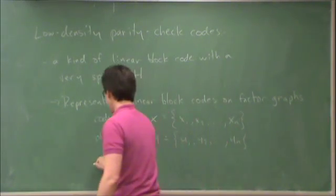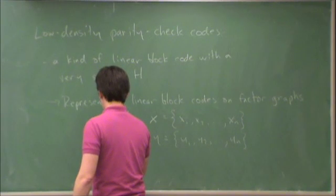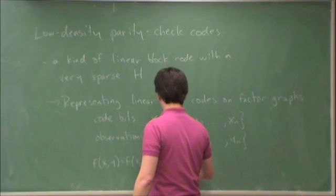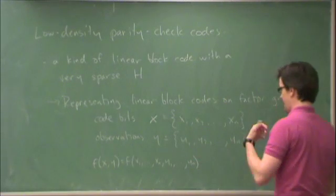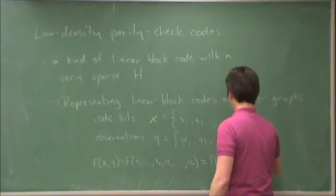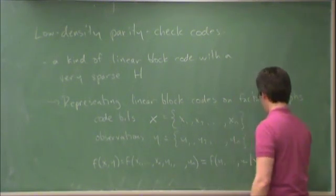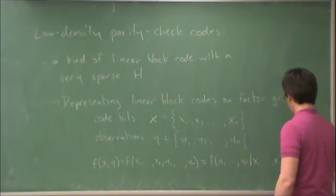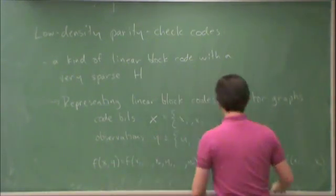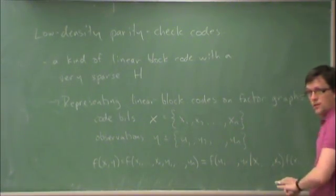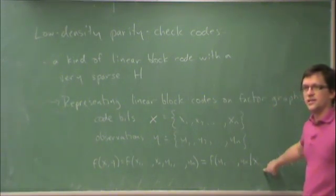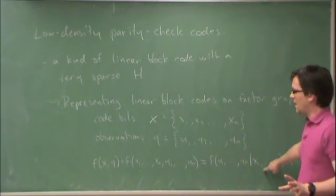We can represent this as a joint probability of X and Y, which is equivalent to saying F of X1 through XN and Y1 through YN. And this is equal to F of Y given X times F of X. This is just the standard chain rule of probability. I can break this joint probability down into this conditional probability times this probability on the input symbols X. Now, this is just the channel input-output probability.